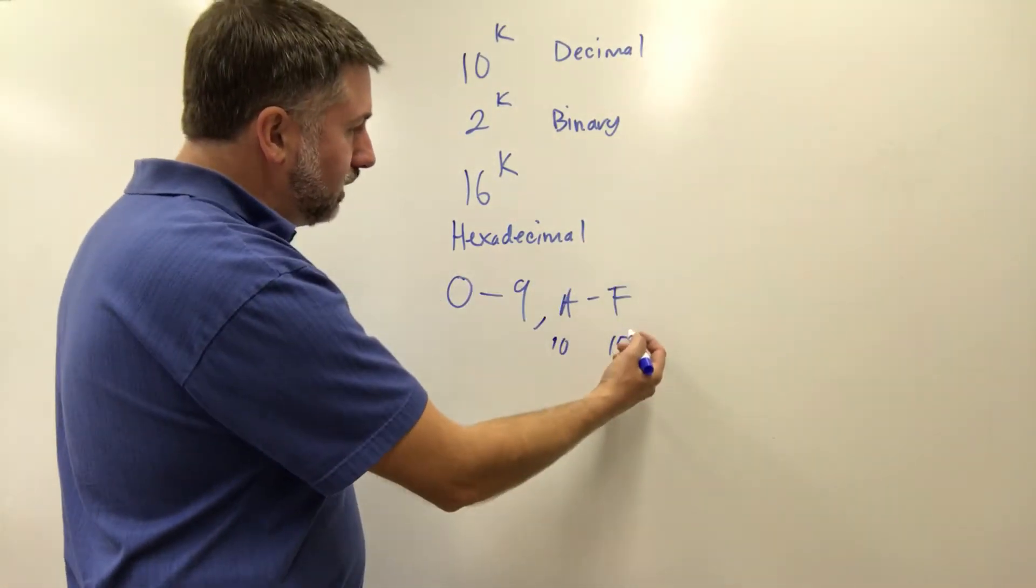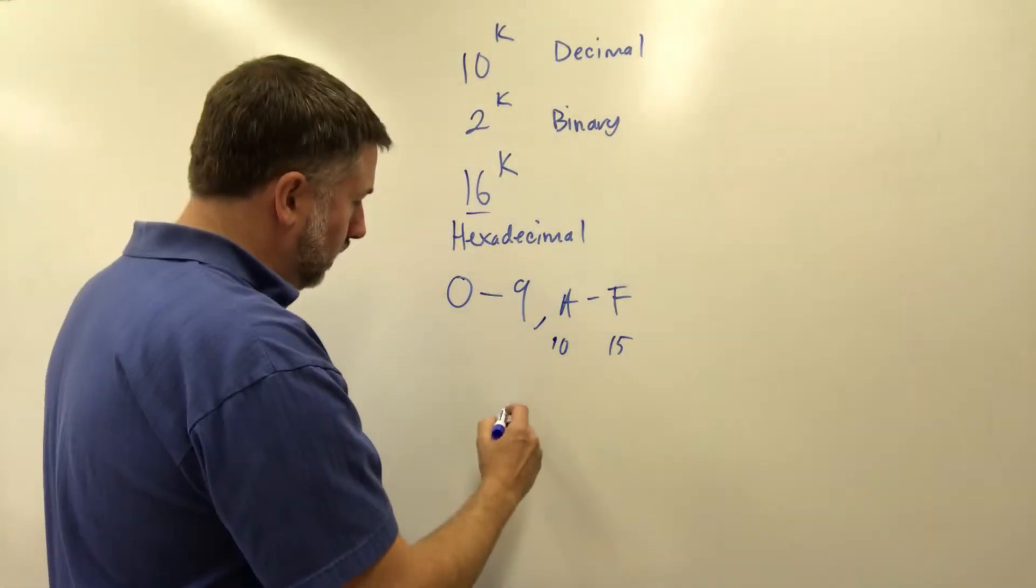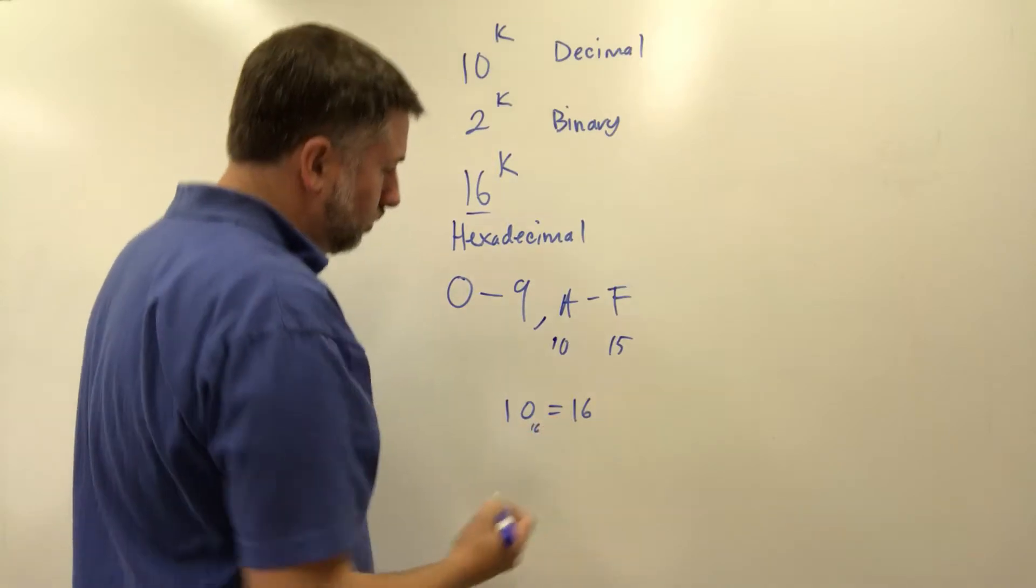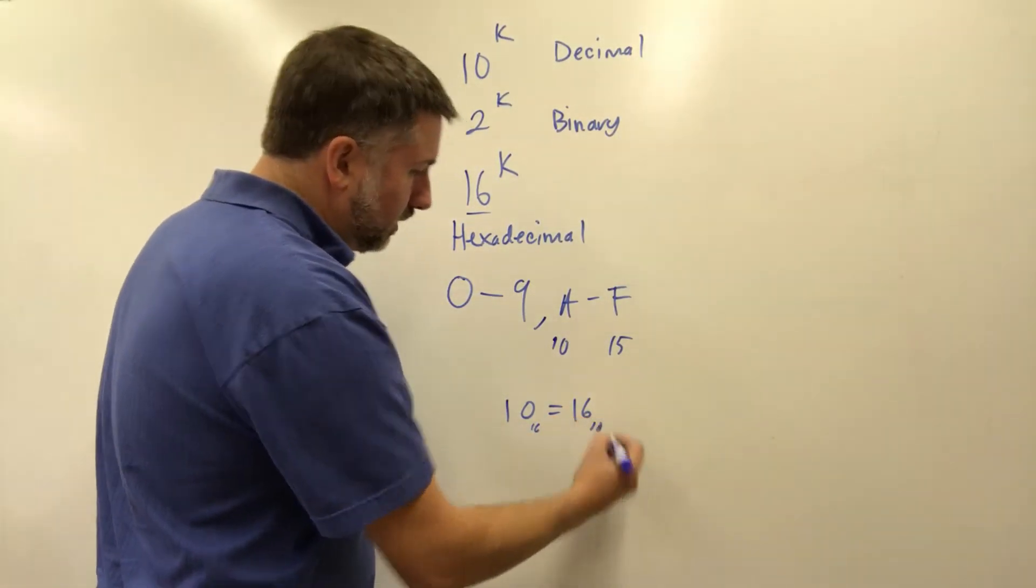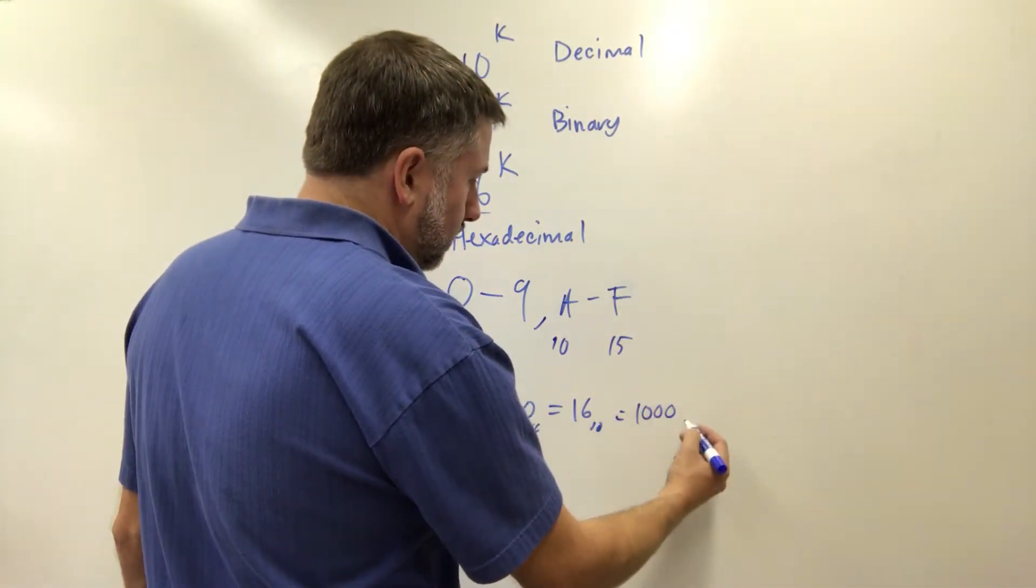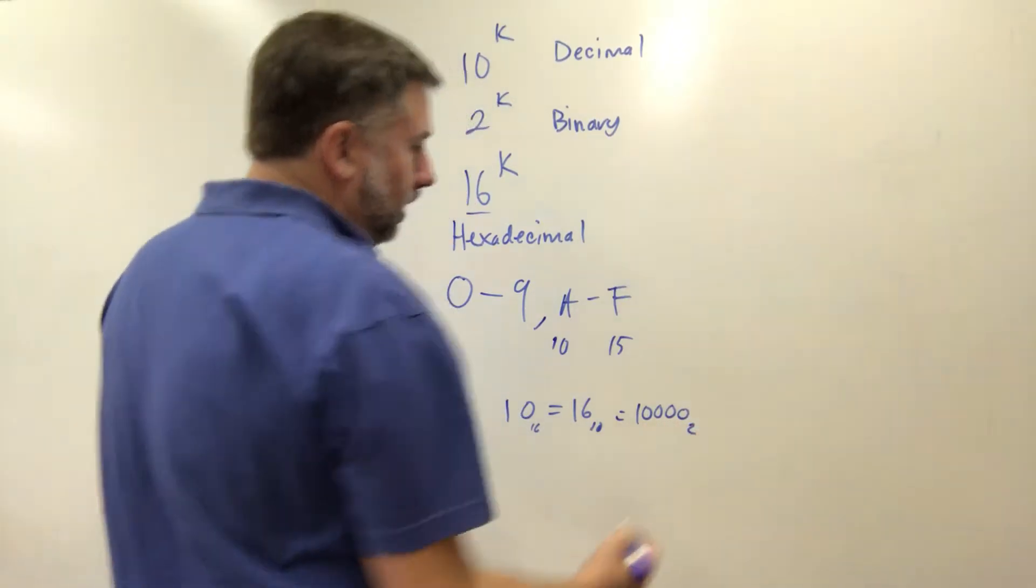And then if we count up to fifteen the next number is going to be sixteen which is a one zero. So one zero in base sixteen is the same as sixteen in base ten and is the same as one zero zero zero zero in base two.